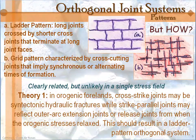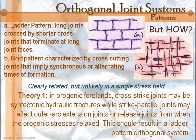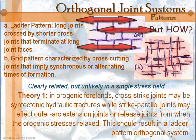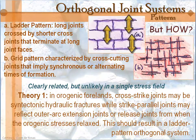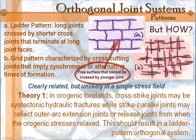In orogenic forelands, you have cross-strike joints — meaning they cross the strike of your folding trend — that may be syntectonic hydraulic fractures, parallel to your sigma-1. Then you have strike-parallel joints, which are perpendicular to sigma-1, and might reflect the outer arc extension joints or the release joints from when the orogenic stresses were relaxed. This gives you a ladder pattern: the long running-through joints form first, then the short joints created with folding as release joints cannot cross the free faces created by the long joints.